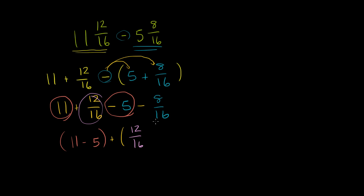12 sixteenths minus 8 sixteenths, and 11 minus 5 is 6. And I have 6 plus, and then our denominators are the same here, so we're going to get something over 16, and 12 minus 8 is 4.